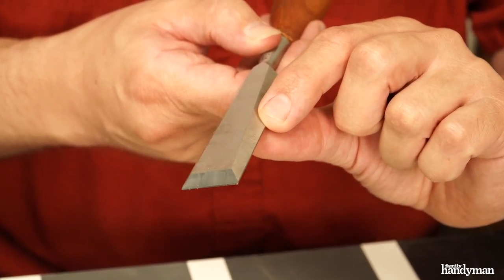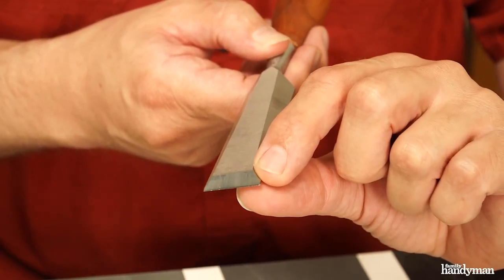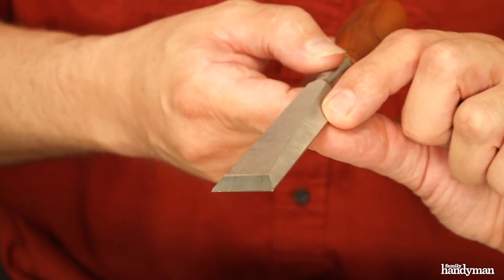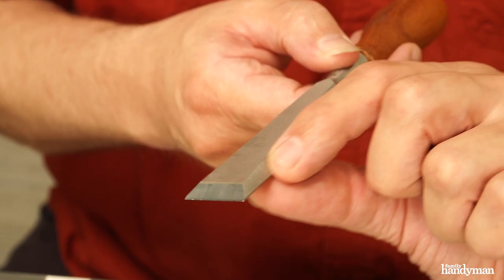For more specific purposes like dovetail chisels, we have something that is beveled on the side, so that allows us to get into nice tight areas to pare out that little last piece of wood.